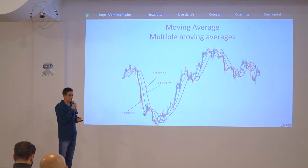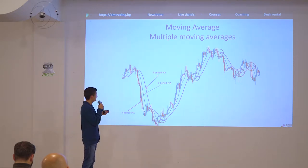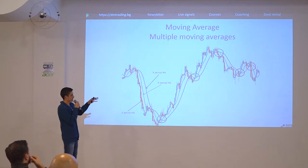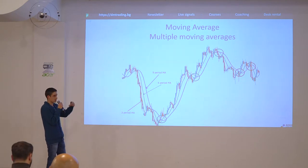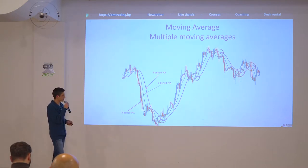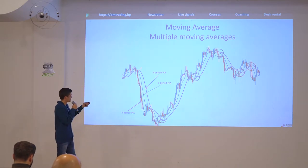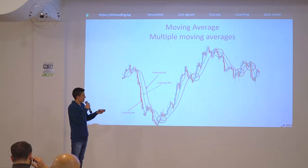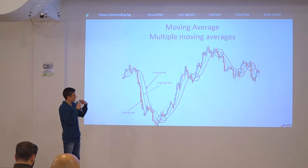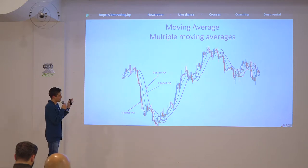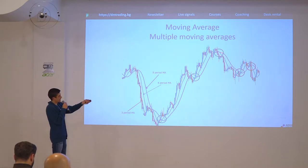But again, sometimes this doesn't work. For example, you can see here: first we had a cross down, both moving averages crossed the third one — the bigger one. The moving averages are aligned, so naturally we expect a downtrend like here, but this doesn't happen — the moving averages turn and we are continuing the uptrend. That is why you cannot use them as a sole signal. You need to have very good risk and money management.